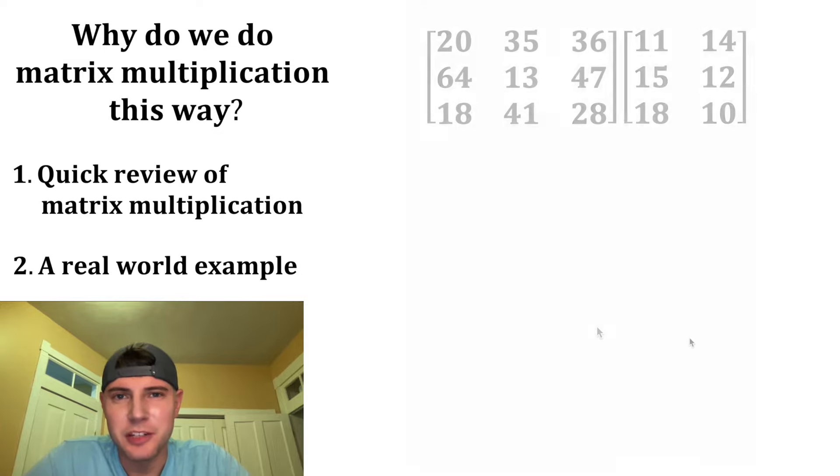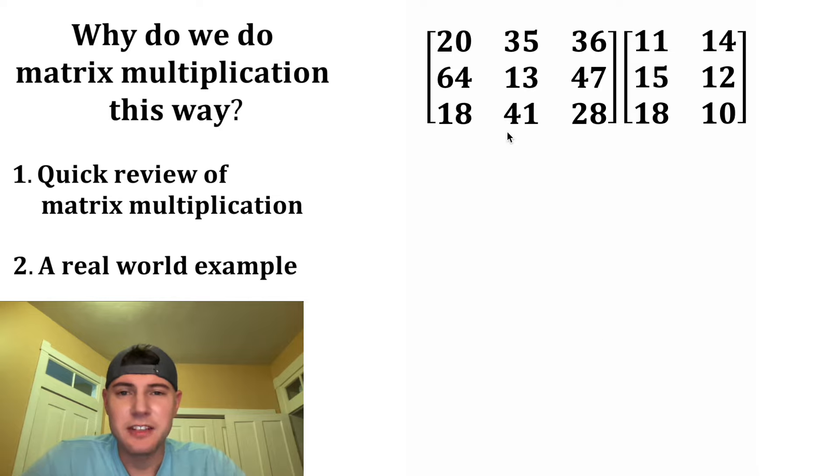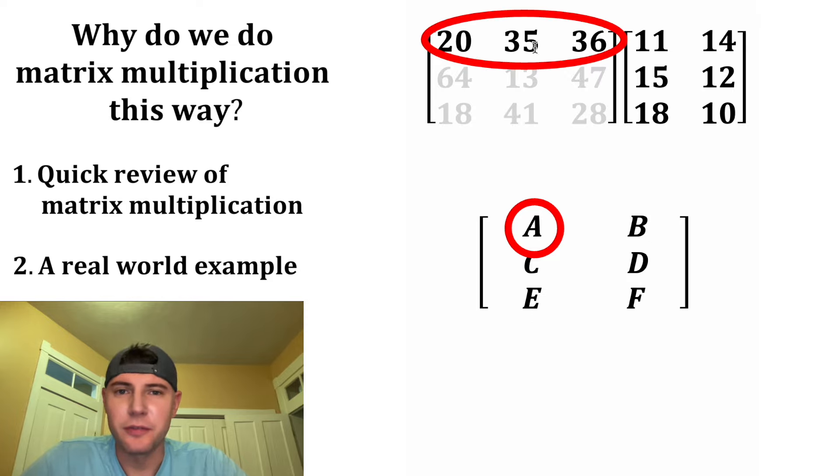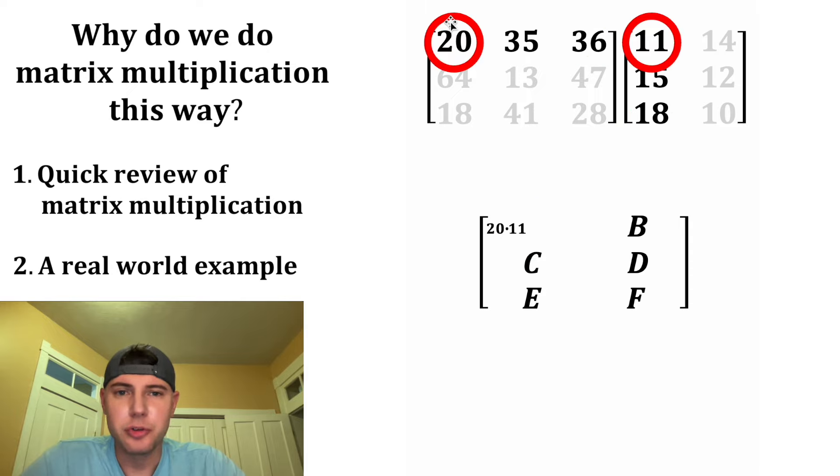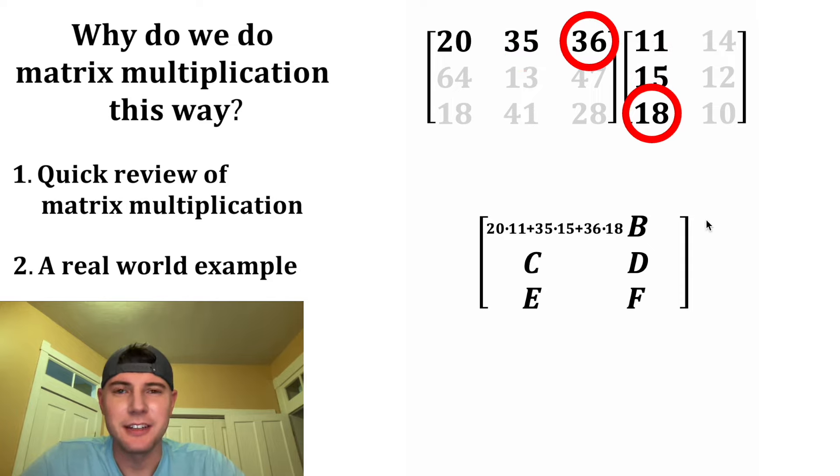Let me show you another one that'll tie to a real world example. So for this example, I want to multiply a three by three matrix times a three by two matrix. And the answer ends up being a three by two matrix. So now we're going to do matrix multiplication again. This A is in the first row, the first column. So we're going to take the first row of this and the first column of this. And then we're going to do 20 times the 11 plus 35 times the 15 plus 36 times the 18. And then after we simplify this, we get 1393.